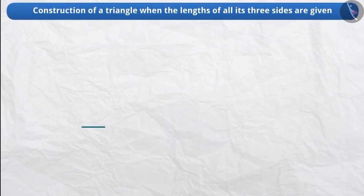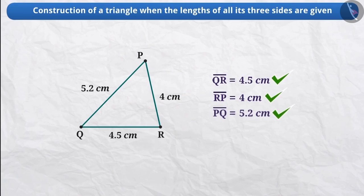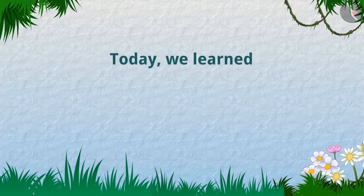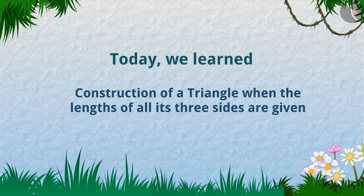Therefore, in order to construct a triangle, we need to know the length of all three sides of the triangle. So, now if you know the length of all three sides of a triangle, we can construct a unique triangle. Today, we learned how to construct a triangle when the length of all its three sides are given. In the next video, we will see some interesting examples related to this.